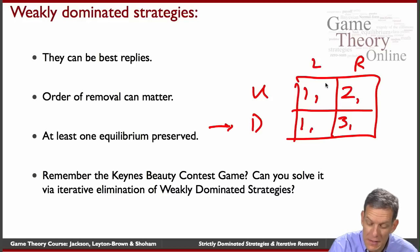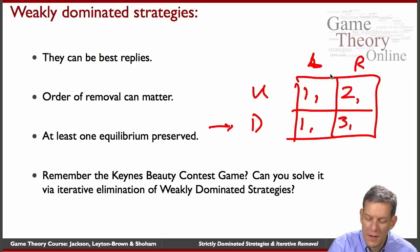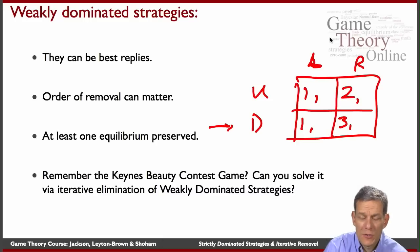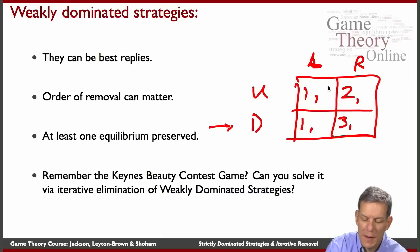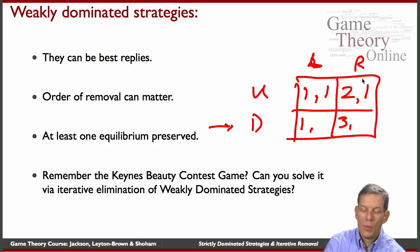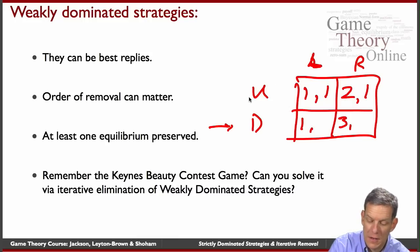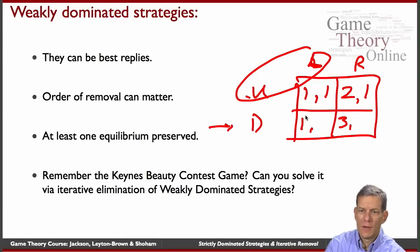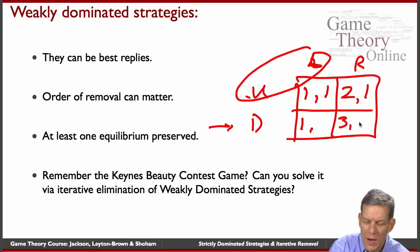Nonetheless, it could be the case that if left is the strategy actually chosen by the column player, then up is still a best reply. For instance, if we put in payoffs of one, one so that the column player is exactly indifferent between the two strategies, then this is actually a Nash equilibrium. So eliminating that actually eliminates one of the Nash equilibria of the game. Depending on what those payoffs are, we could end up eliminating a Nash equilibrium of the game.